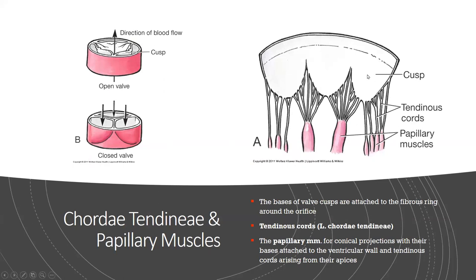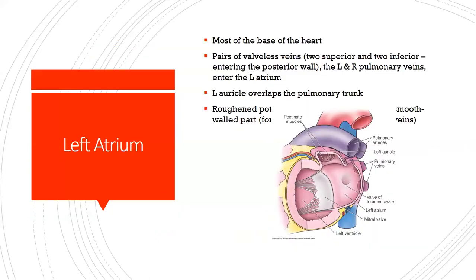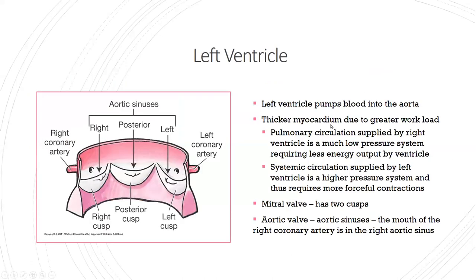The papillary muscles and chordae tendineae maintain closure of the valves to prevent backflow or regurgitation. For the interventricular septum, the high-yield points are: it's between the ventricles, the top is membranous, the bottom is muscular. The left atrium is the majority of the base of the heart — so if asked what chamber is at the base, left atrium is your answer. The left ventricle pumps blood into the aorta and has the thickest myocardium because it does the most work.